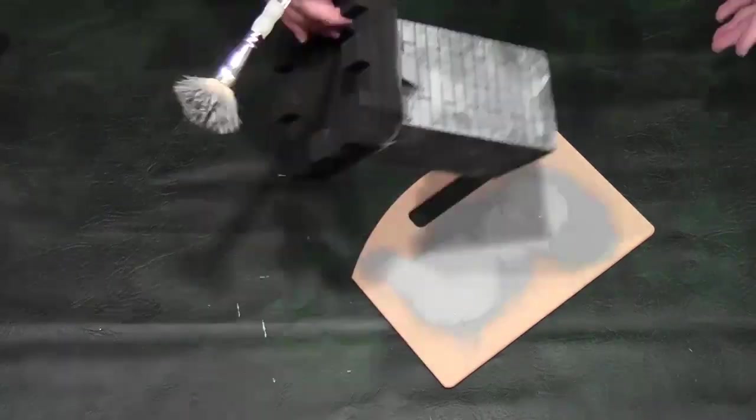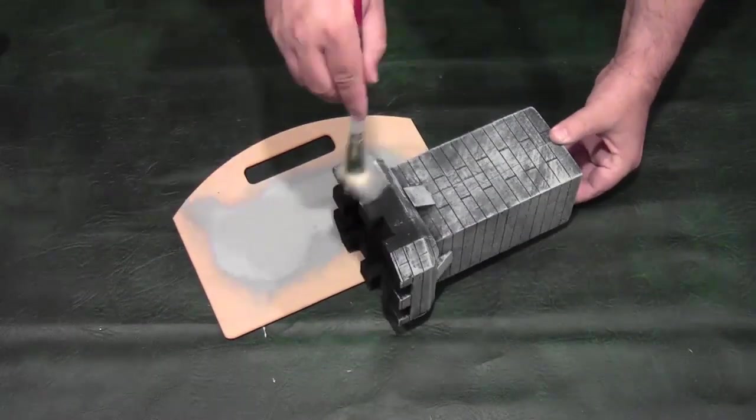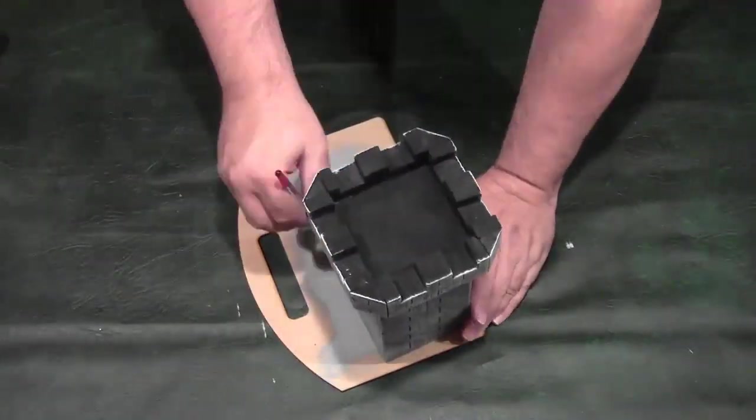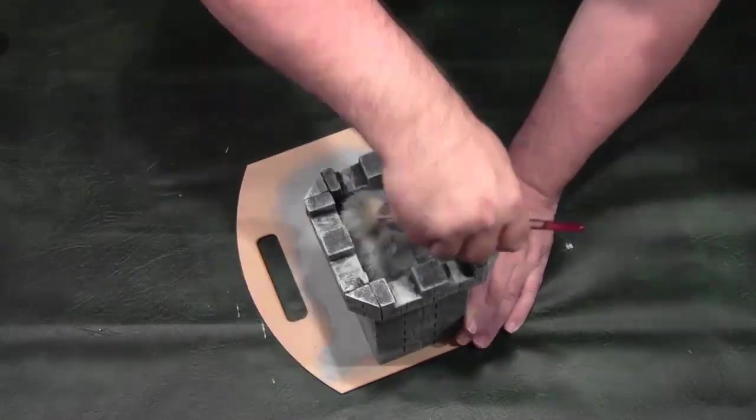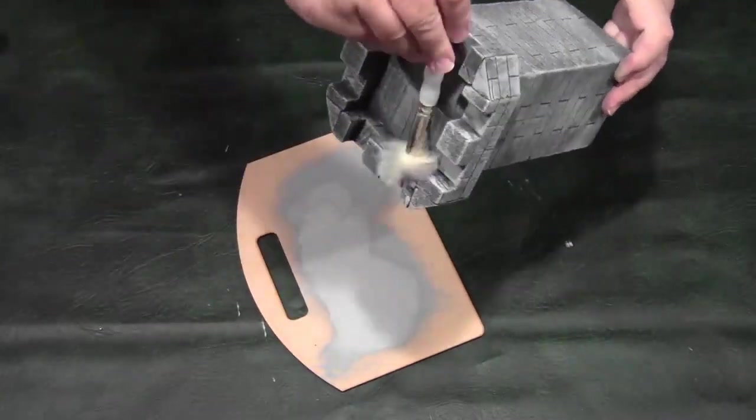I put the paint on a scrap piece of MDF first, and spread it all over the brush, to help in the dry brush process. In order to get the paint right into the corners, I put the paint brush in, and then twist it round.